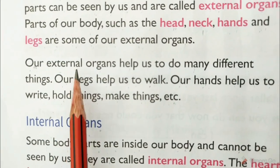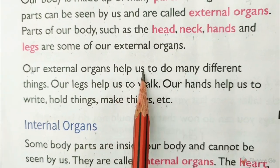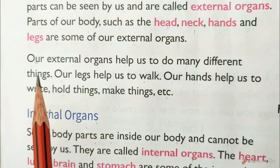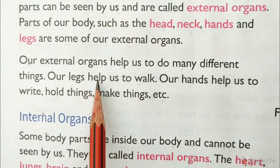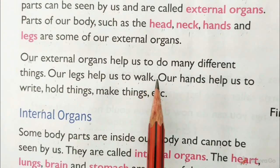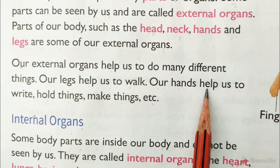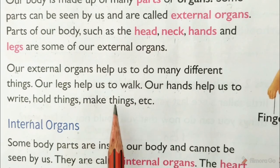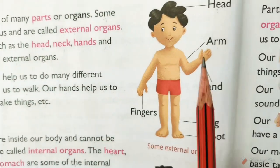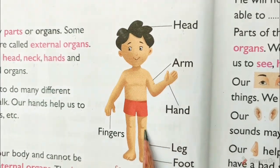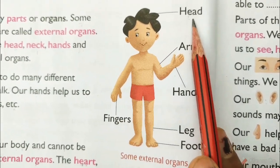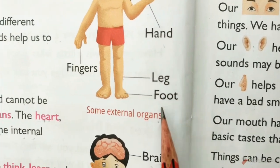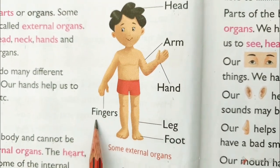Our external organs help us to do many different things. Our legs help us to walk. Our hands help us to write, hold things, make things, etc. Children, these are our external organs. Examples: head, arm, hand, legs, foot and fingers.